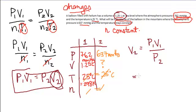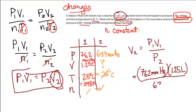My P1 is 762 millimeters of mercury. My V1, I'm sorry, that was my P1. Did I say that right? It's my P1. My V1 is 1.25 liters, and my P2 is 637 millimeters of mercury, and all I have left to do is to plug those values into my calculator and see what the answer is.